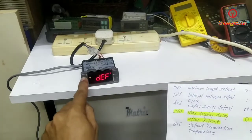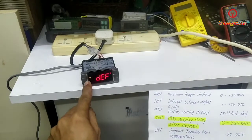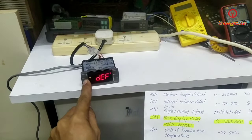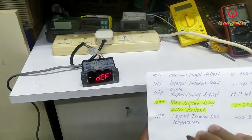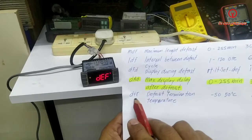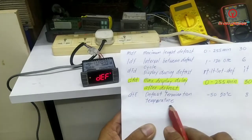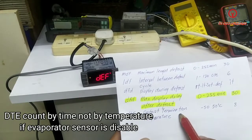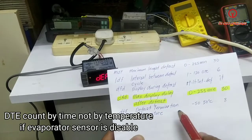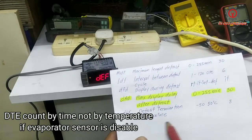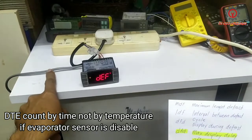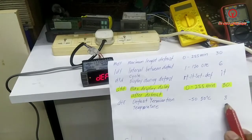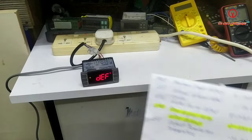We started manual defrost at negative 20. Take note our DTE, which is defrost termination temperature - if you use only one sensor, DTE is a function of time, not by temperature, because you disengage the evaporator sensor.